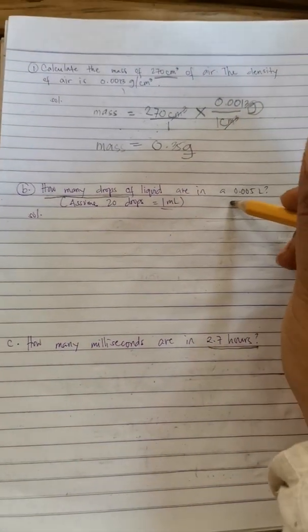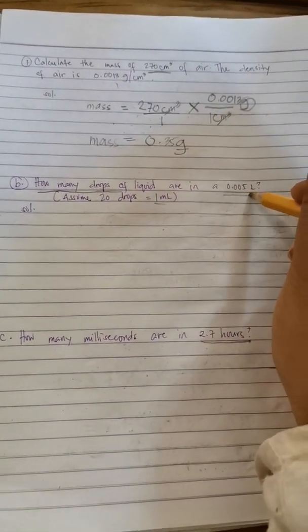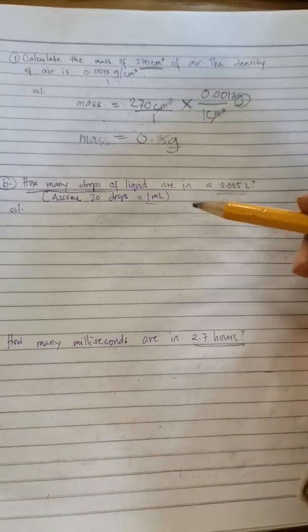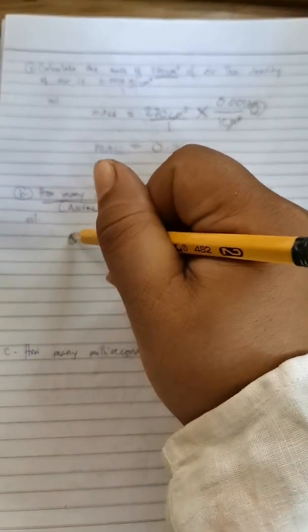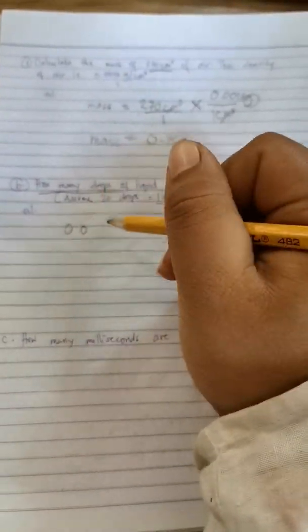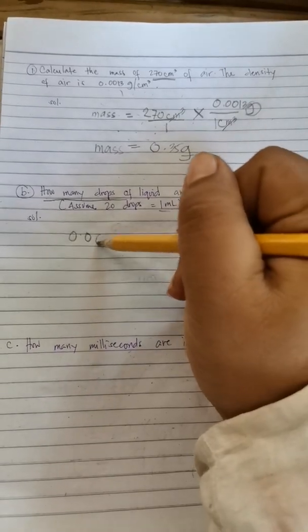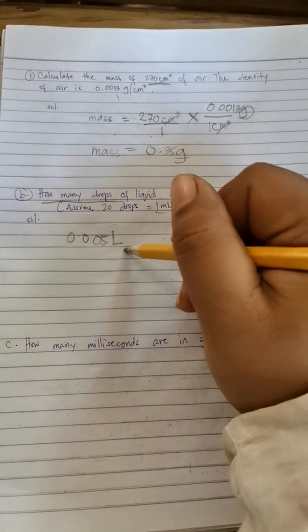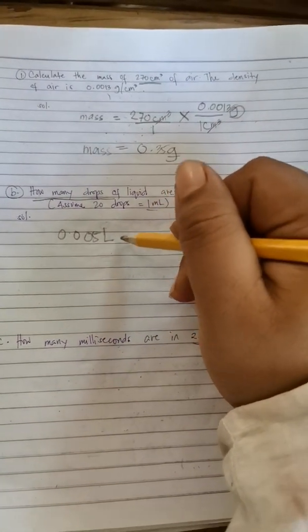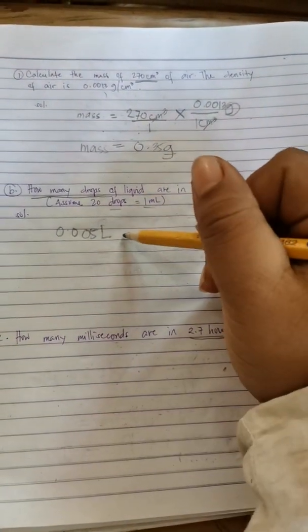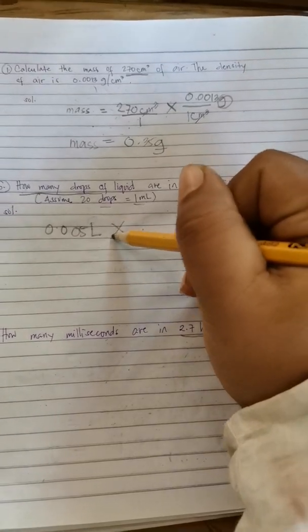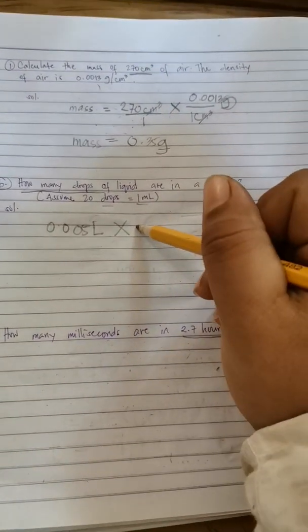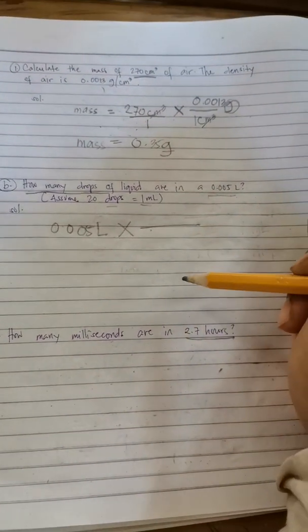So first, we have to write this. We are going to convert this into drops. So our goal is to eliminate liters and that should become drops. So times, you have to write the multiplication sign, then that one.